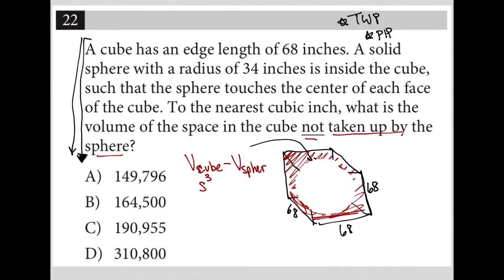And then the volume of a sphere, just looking that up separately here, this will be provided to you on the test. The volume of a sphere is equal to four thirds pi R cubed. So we know that S is 68. We also know that R is 34.